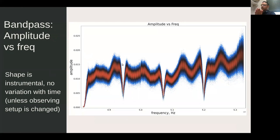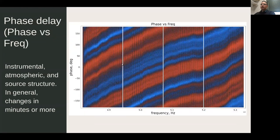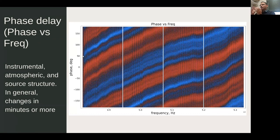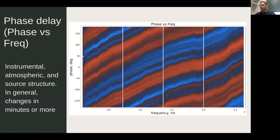In principle, if you have a good bandpass calibrator you don't need to calibrate bandpasses during self-calibration. Phase changes with frequency show the delay, which has several components — instrumental, atmospheric, source structure — but in general these change on longer timescales than your scan time. Because you have already calibrated delays along the observation with phase referencing, you typically won't need to calibrate them further, though it can occasionally happen.